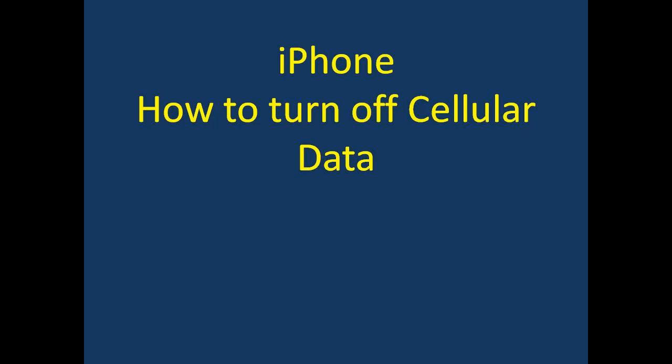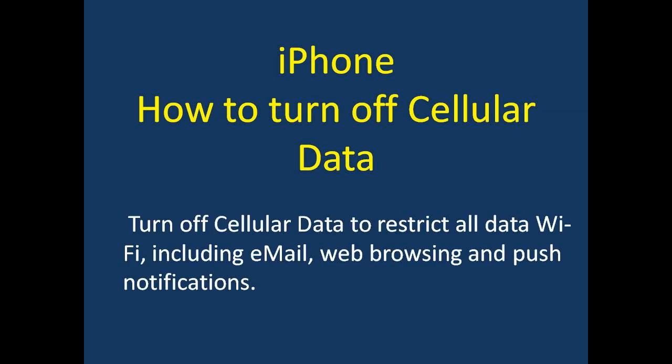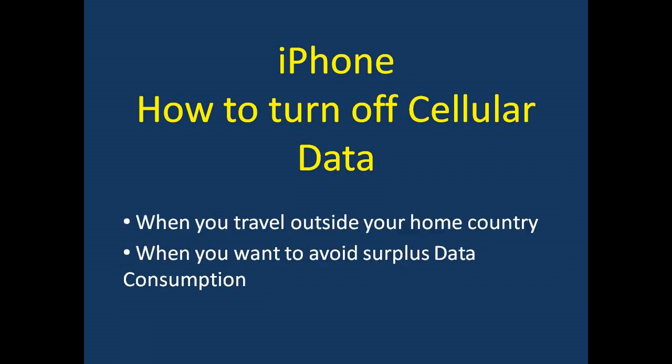This video will show you how to turn off your cellular data on your iPhone. Turn off cellular data to restrict all data to Wi-Fi, including email, web browsing, and push notifications. This would be important to do when you are traveling outside of your home country, or even within your own home country when you are accumulating too much data consumption. In both cases you can be billed high amounts of money from your cell phone provider, so this is a way of limiting that.